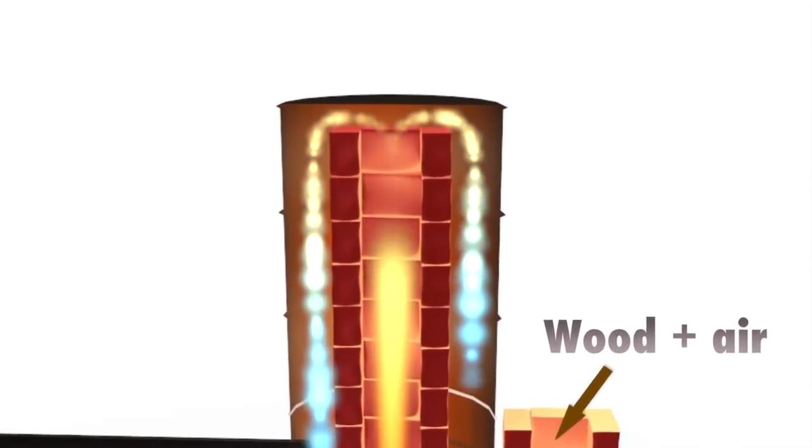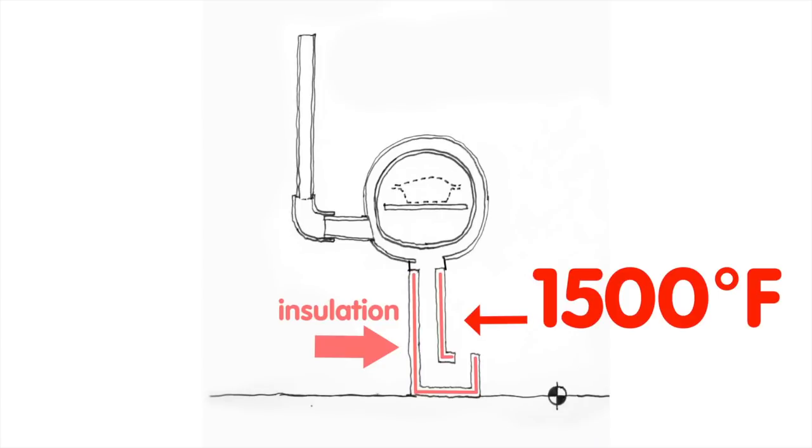This pushes the temperatures over 1500 degrees Fahrenheit, which burns the smoke and creosote completely. So now the smoke and creosote are bonus fuels.